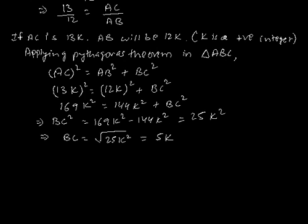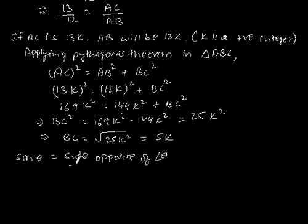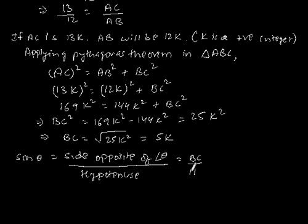Now let's find all trigonometric ratios, starting with sin θ. Sin θ is equal to the side opposite to angle θ divided by hypotenuse. This is equal to BC/AC, which is equal to 5K/13K, which gives sin θ = 5/13.